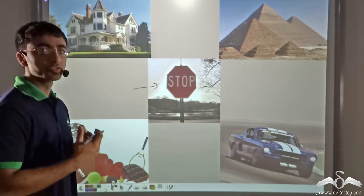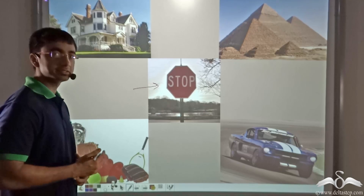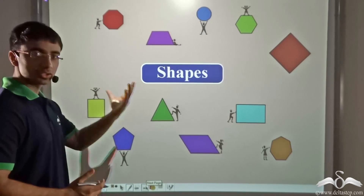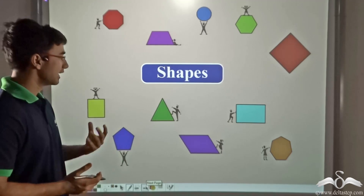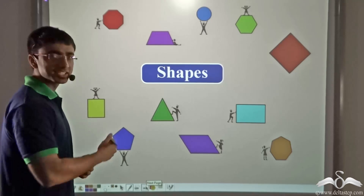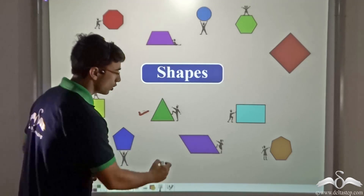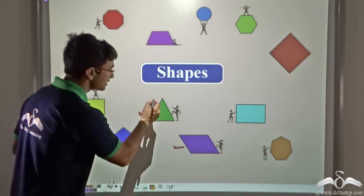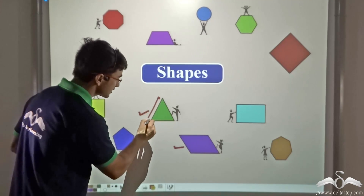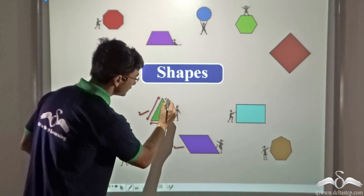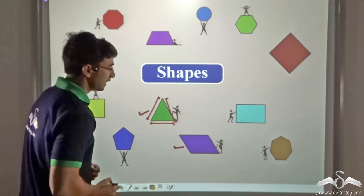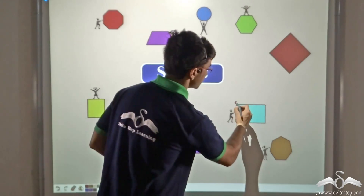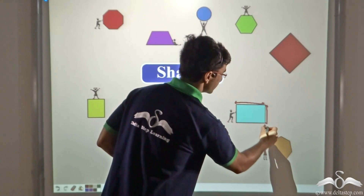So let us find out about a few shapes and try to understand them better. All these pictures that you see on the screen are different kinds of shapes. As you can see, if you consider any shape — let us say this shape or this shape — they are all made up of line segments. As you can see, this is made up of three line segments and this is known as a triangle. Even take for example this shape — it is made up of four line segments.